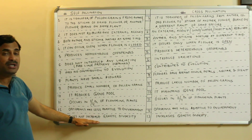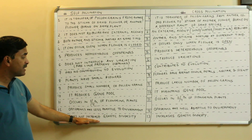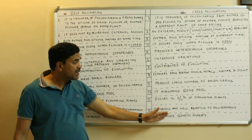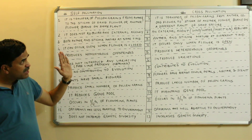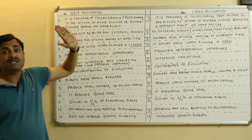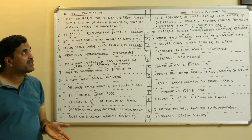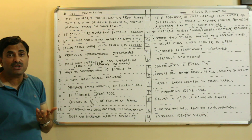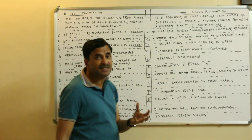The last point: self-pollination does not increase genetic diversity, as variations are not produced and there is no contribution to evolution. In contrast, cross-pollination increases genetic diversity by producing variations. These were the 13 points showing the differences between self-pollination and cross-pollination — a very important topic. For a detailed description of each, there are already videos uploaded on those topics.